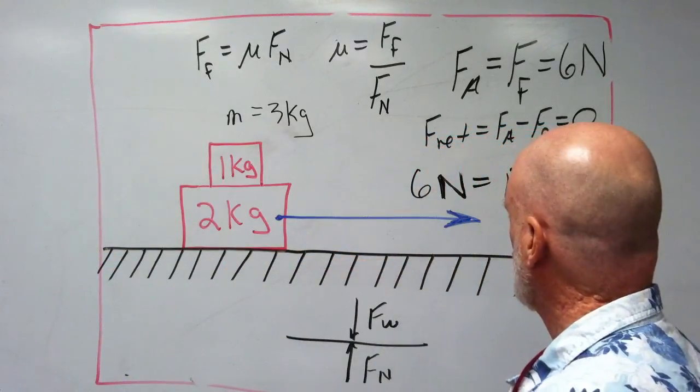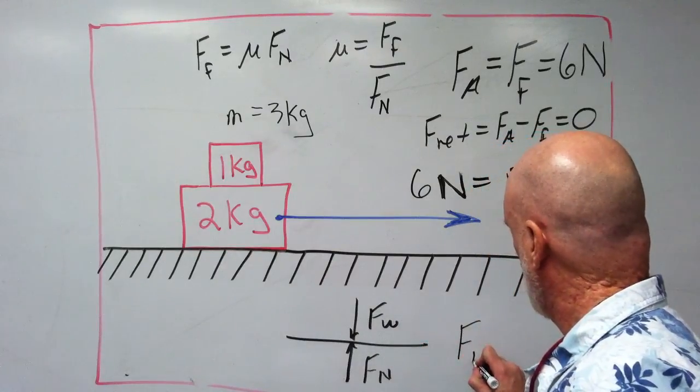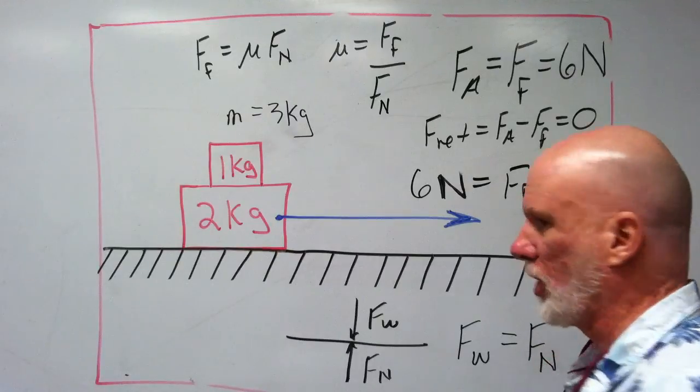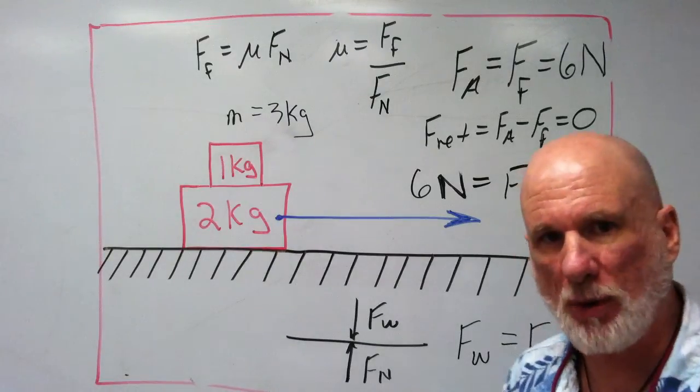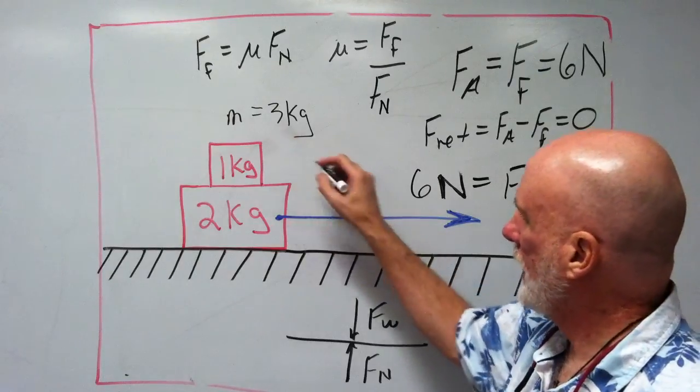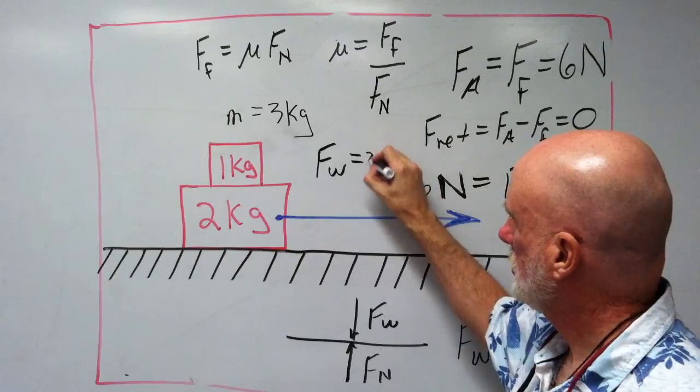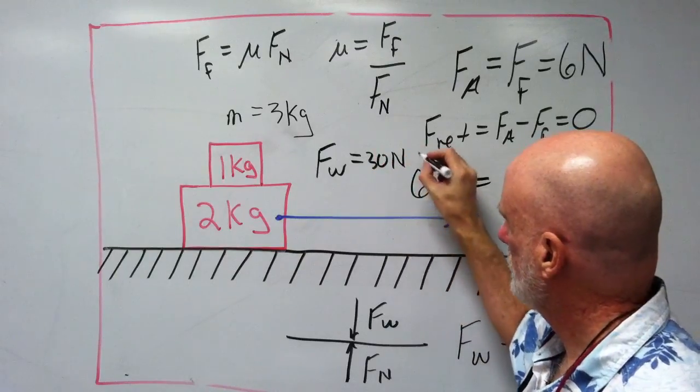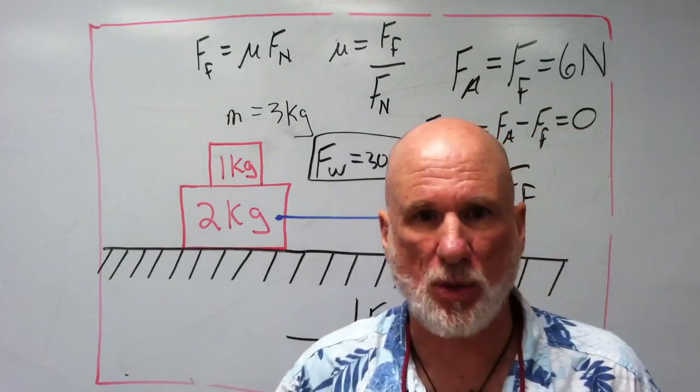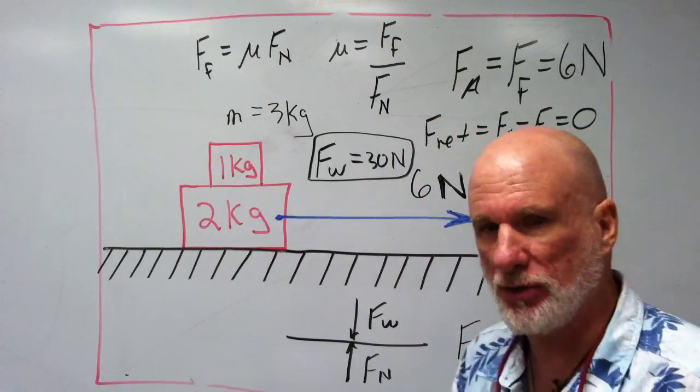So in this setting, the weight equals the normal force. Three kilograms: Fw equals 30 newtons. That's the weight of the object.